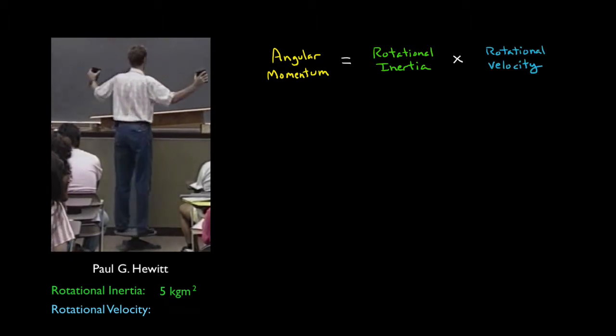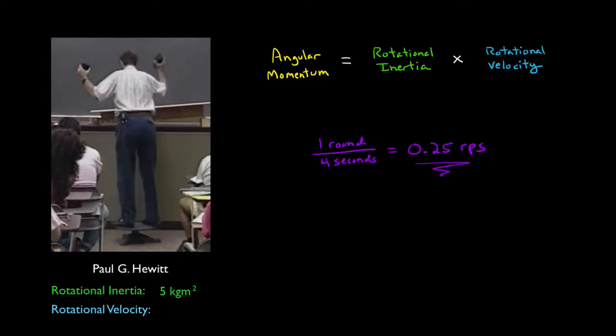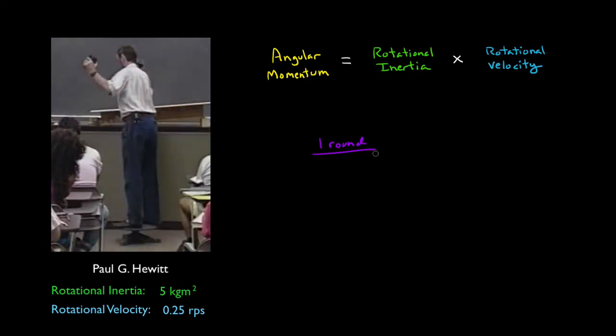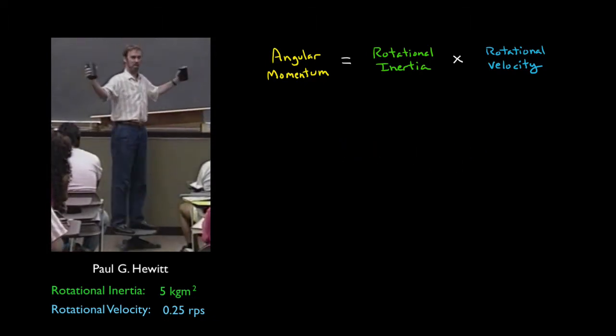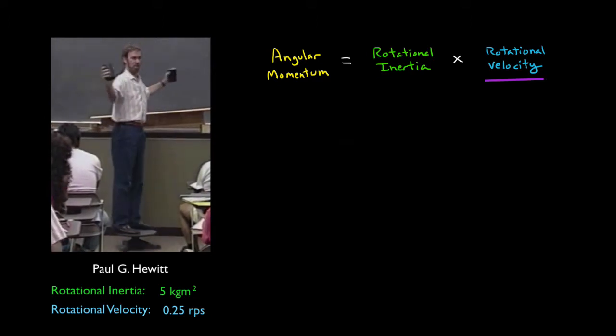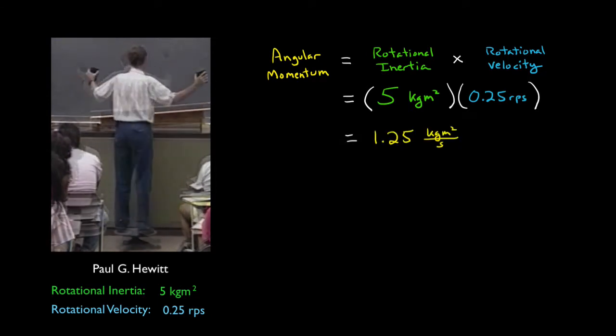His velocity here is 1 round per 4 seconds, which is about 0.25 rounds per second. Therefore, his angular momentum is rotational inertia times rotational velocity, or 5 times 0.25 equals 1.25.